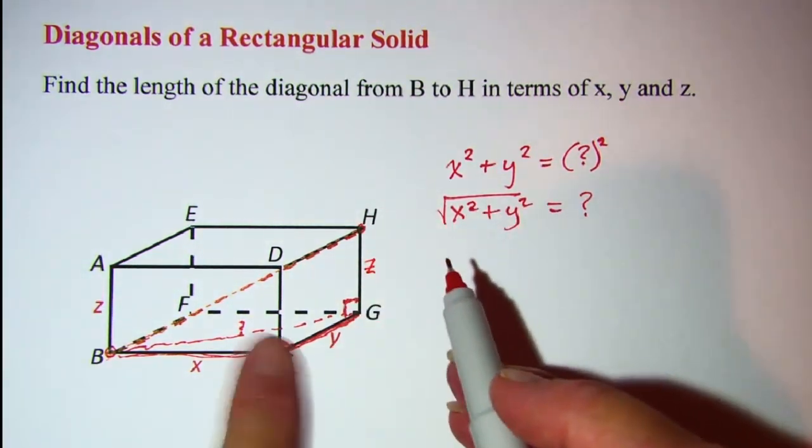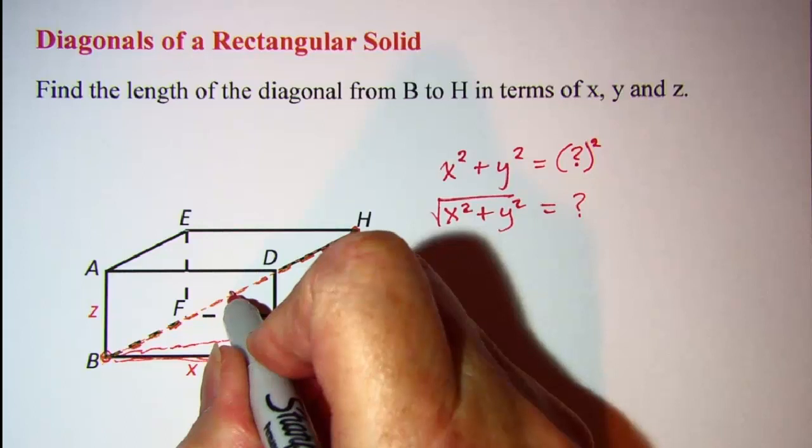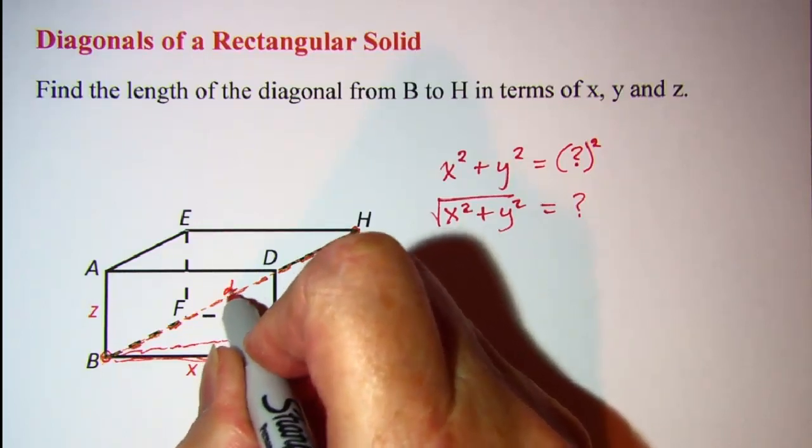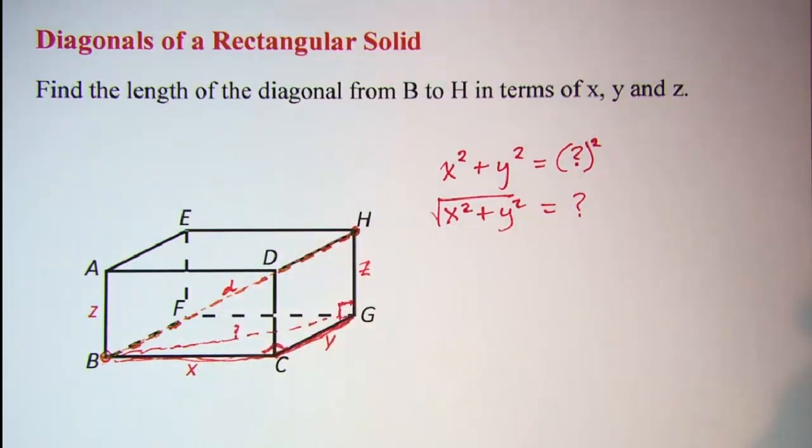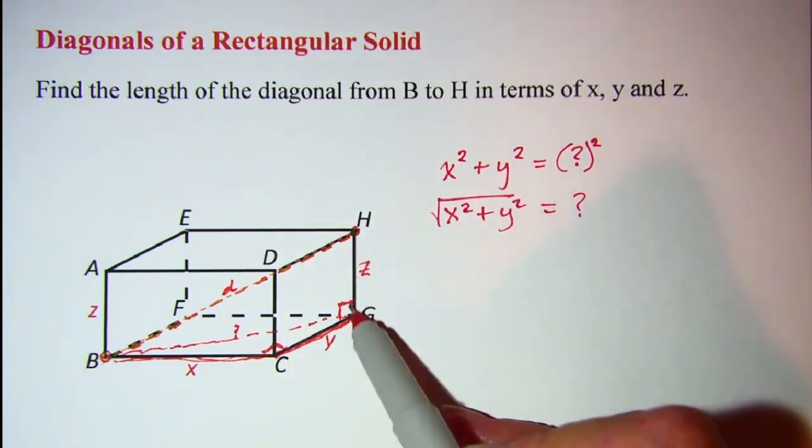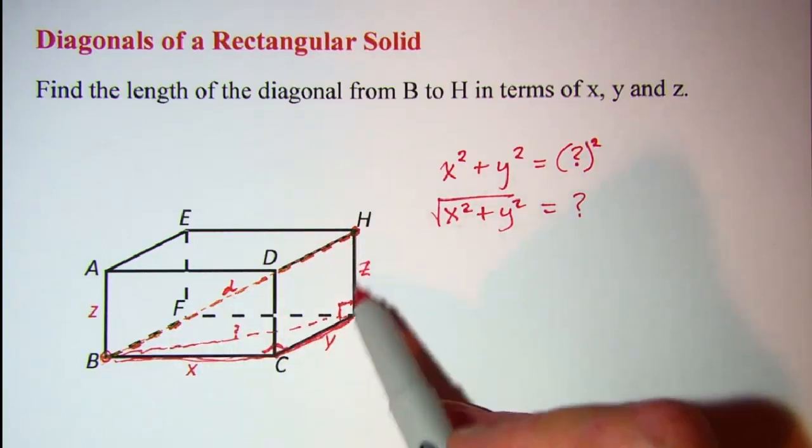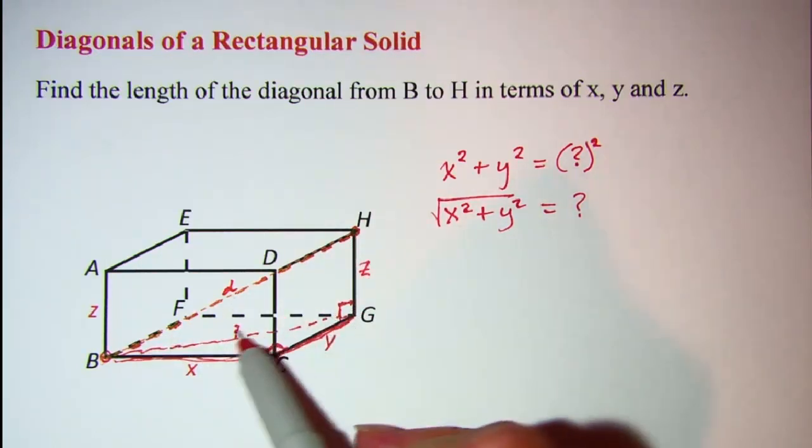So then this vertical one, let me label the diagonal that I'm looking for, I'll call that little d. So now again the sum of the squares of the legs of this right triangle is equal to the hypotenuse squared.